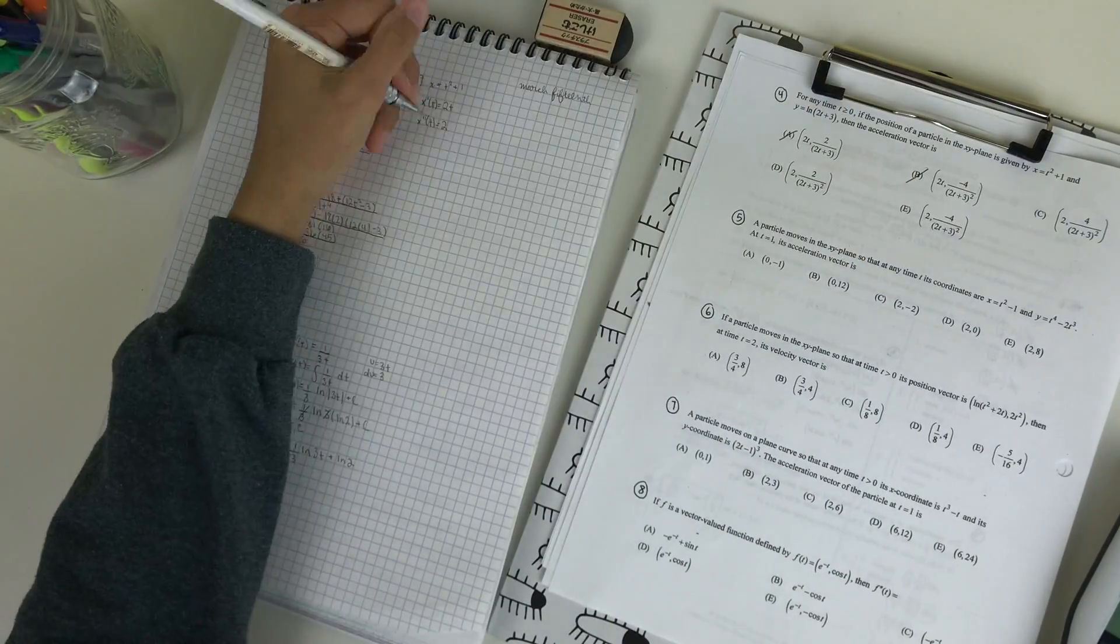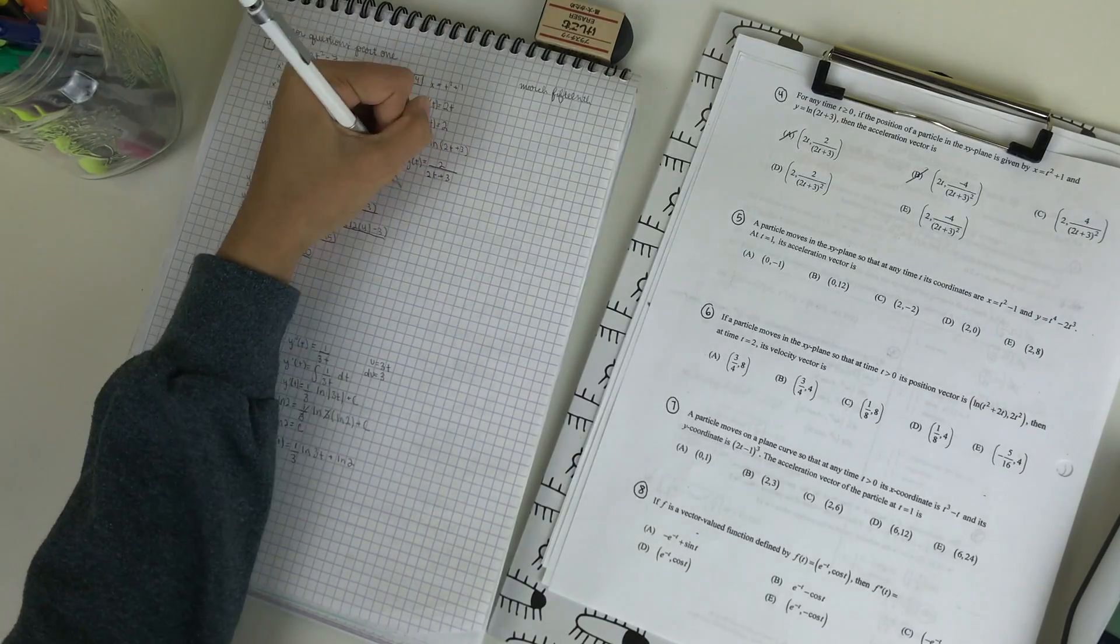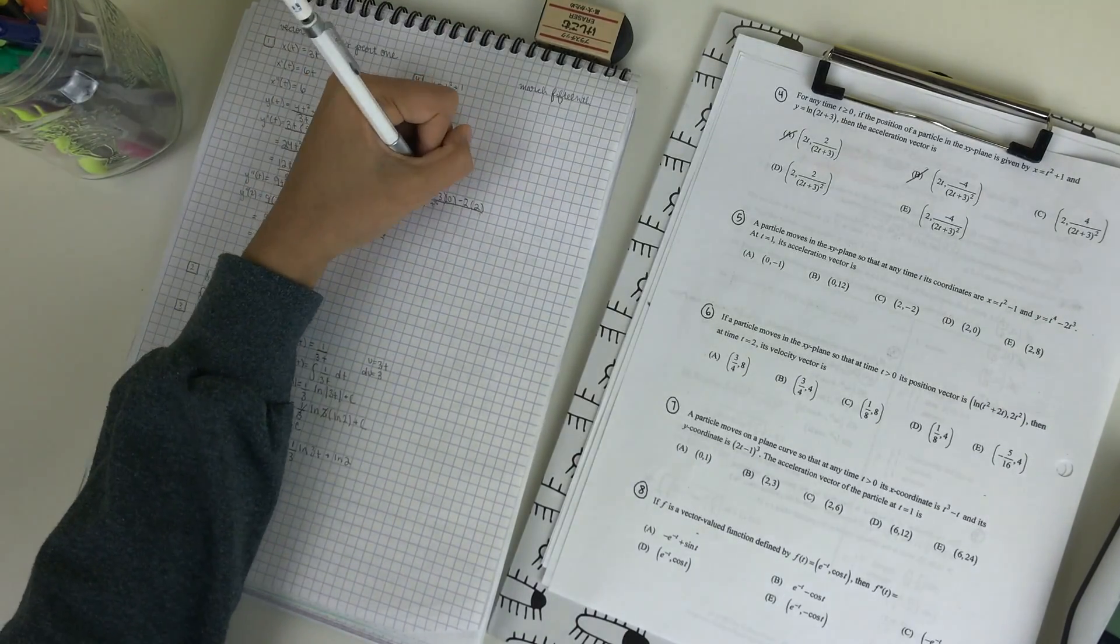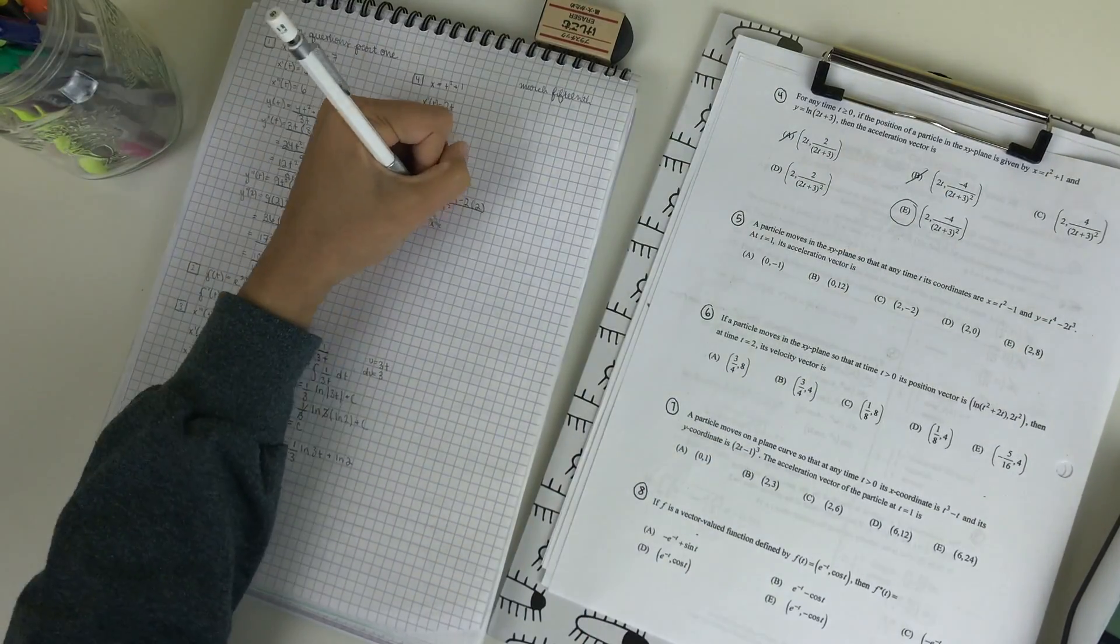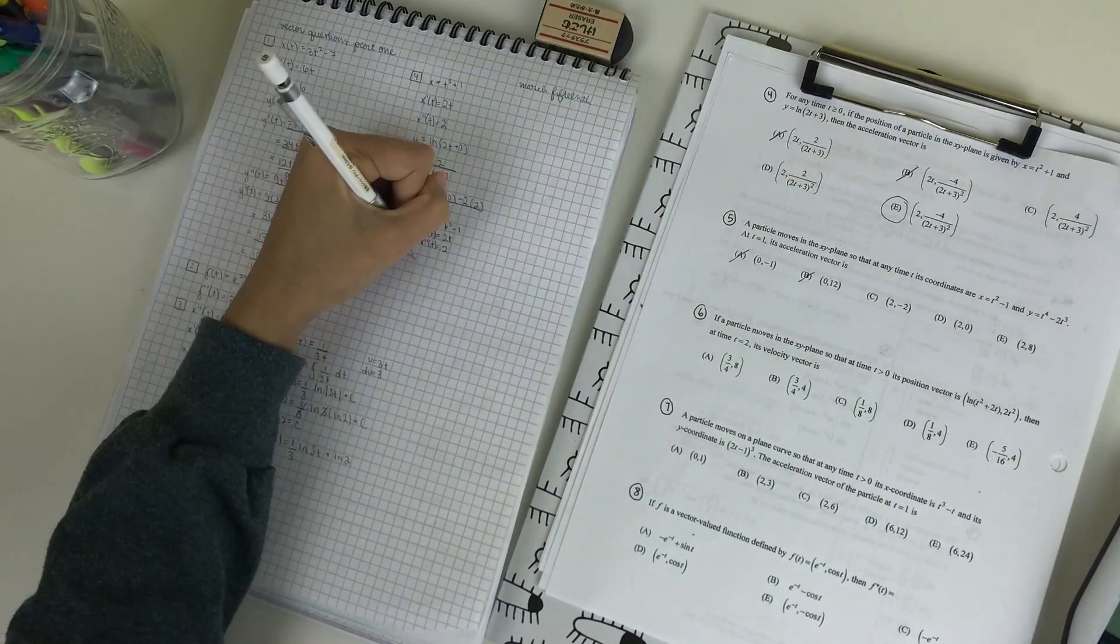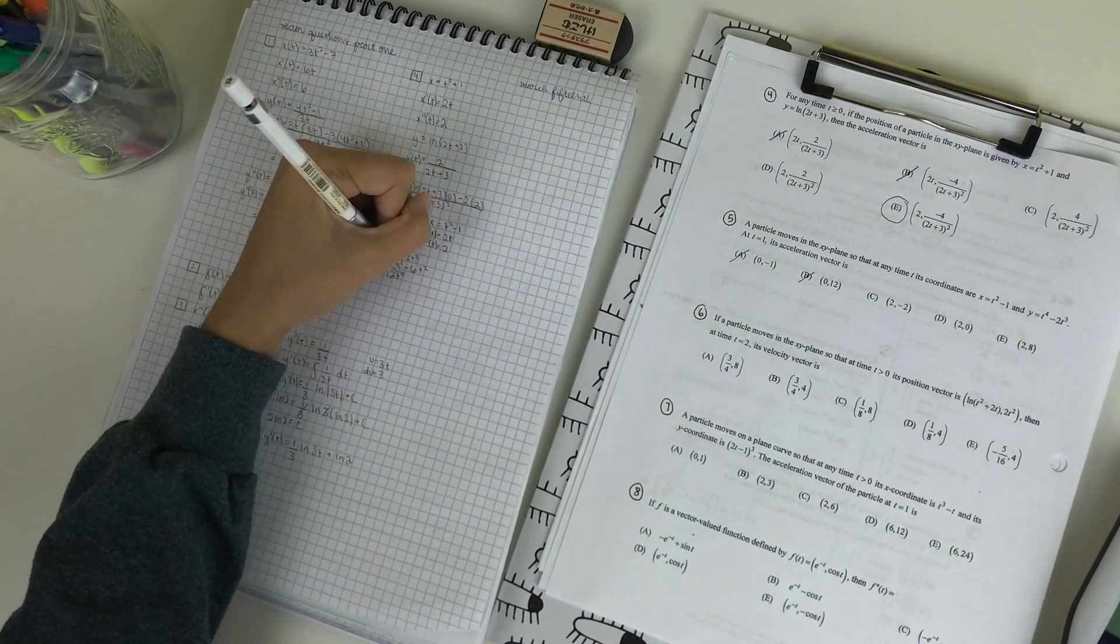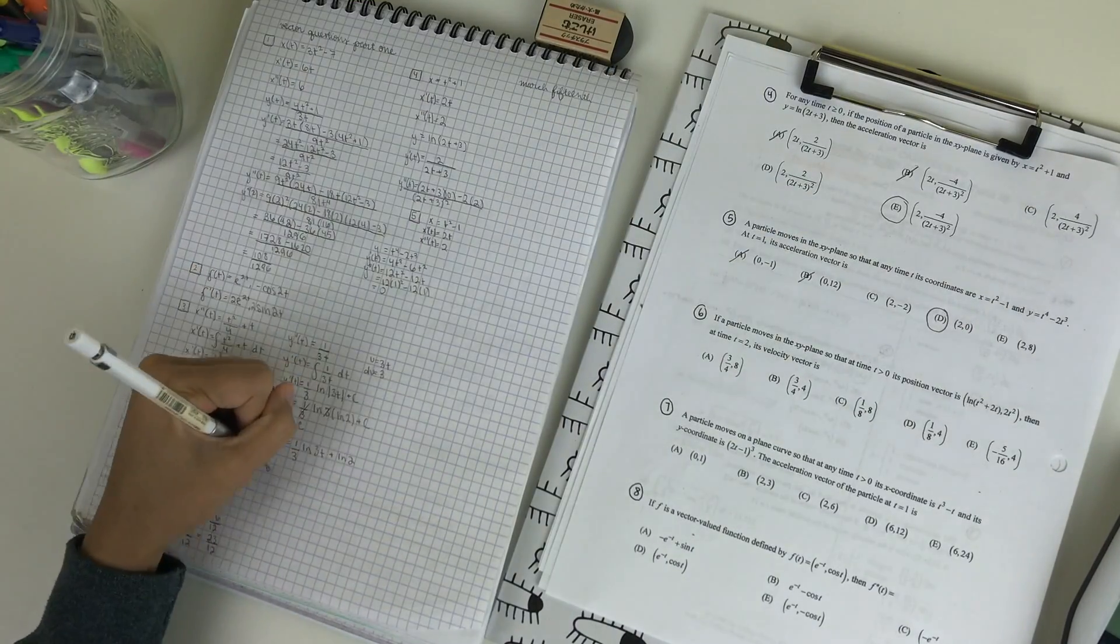For anyone curious as well, this mechanical pencil I'm using is a 0.5 Muji aluminum drafting pencil, and I really really like it because it's really skinny and I'm able to keep my handwriting pretty neat and small.